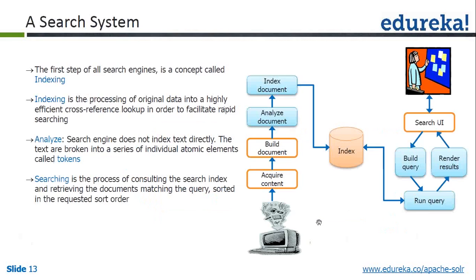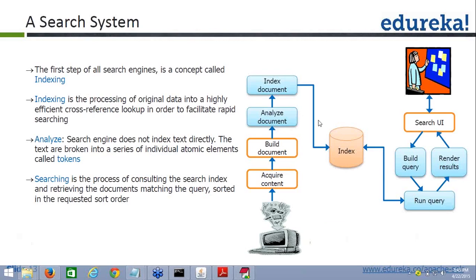Nitin asks: what if all documents are boosted? All documents cannot be boosted equally — not all documents will contain all the terms. A more relevant example: if two documents have the same score, they'll appear together. Hari asks about pushing the same document again — if you push a document with the same ID (e.g., ID 123, name Hari), then push another document with the same ID 123 but name Nitin, it will override the original document.